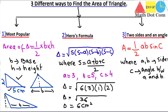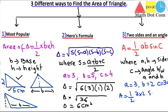For example, if a = 3, b = 2, and the angle C (theta) = 30 degrees, then area = 1/2 · 3 · 2 · sin(30°). Since sin(30°) = 1/2, this gives area = 3/2 = 1.5 square centimeters.